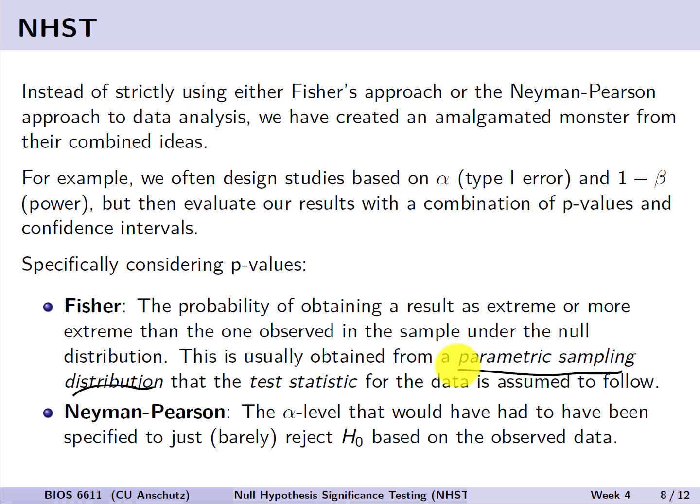In fact, we've actually combined that into the alpha level being the thing we think of as we design and power studies for the type 1 error rate, and then the p-value being the thing we compare on the back end with the null hypothesis significant testing approach, where if our p-value that we observe at the end of the study is less than the alpha level we used to design the study, we declare statistical significance.